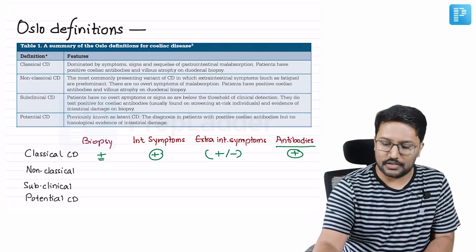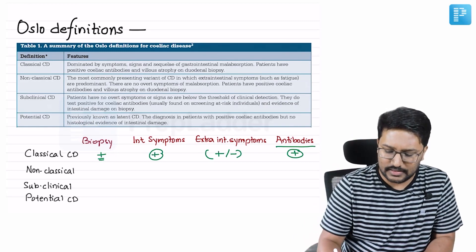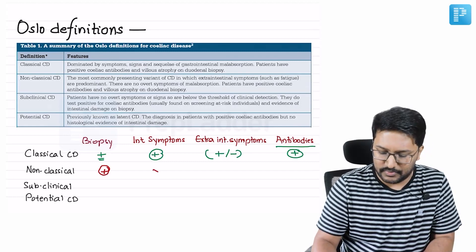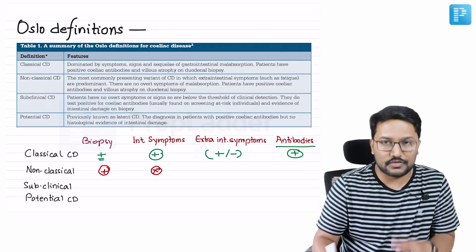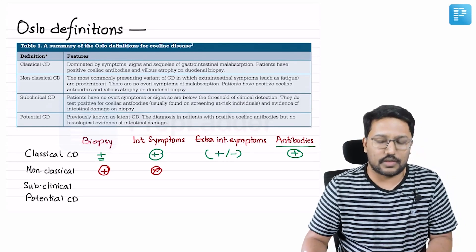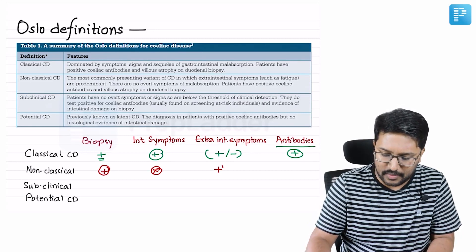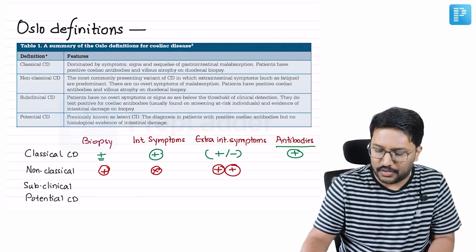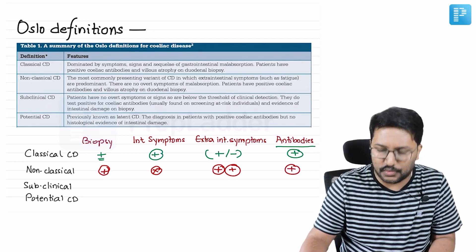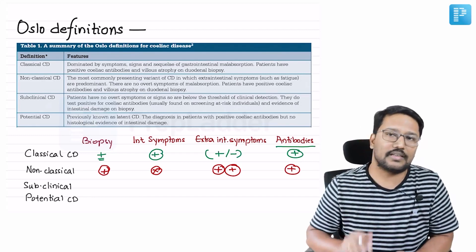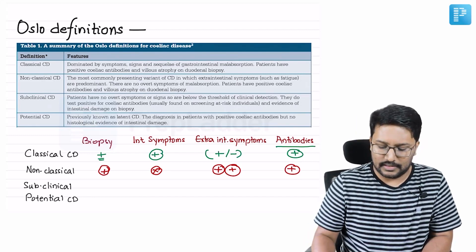What is non-classical? In non-classical celiac disease, the biopsy is positive, intestinal symptoms are not present — that is why we call it non-classical — extra-intestinal symptoms are present, and antibodies are present. It is basically celiac disease but without intestinal complaints.